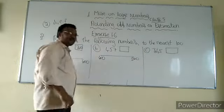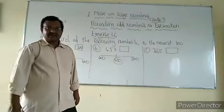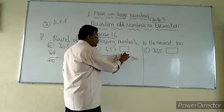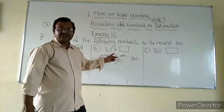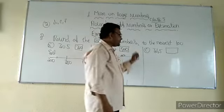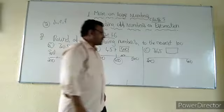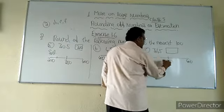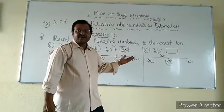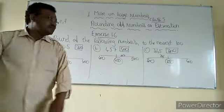Next, 457 is in between 400 and 500. The halfway is 450. 457 is greater than 450, so it is in the part of more than halfway. More than halfway means we have to round up that number to the next hundred, that means 500. Next, 345 is in between 300 and 400. The halfway is 350. 345 is less than 350, so it is in the less than halfway part, meaning we round down to 300.